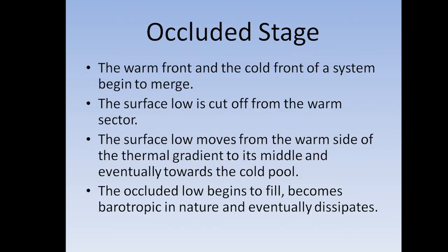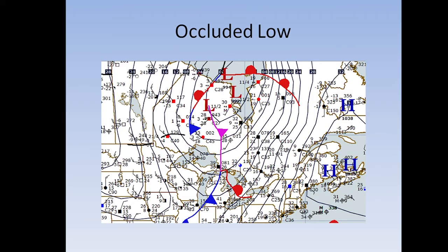In the occluded stage, the warm front and cold front of the system begin to merge. A surface low is cut off from the warm sector, and the surface low moves from the warm side of the thermal gradient to the middle and eventually toward the cold pool. That surface low pushes back, the low pressure system stacks into the upper levels toward the colder air. The occluded low begins to fill, becomes barotropic in nature, and eventually dissipates. Once you see the occlusion, you know that system is actually weakening. If there were isotherms on the chart, you would see a thermal ridge right through that occlusion, coming out of the low and into a cold front through the trough.